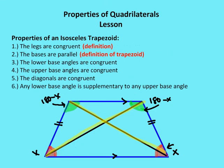Properties of an isosceles trapezoid: the legs are congruent by definition. Remember, the sides that are parallel are the bases, and the sides that are not parallel are called the legs — the legs are congruent by definition of an isosceles trapezoid. The bases are parallel by definition of a trapezoid. The lower base angles (marked as x in red) are congruent, and the upper base angles (green) are congruent as well. The diagonals are congruent.